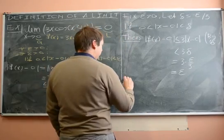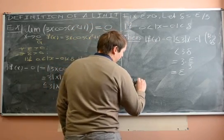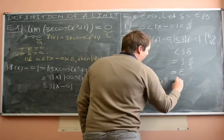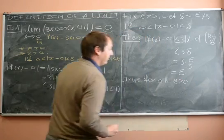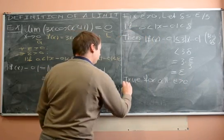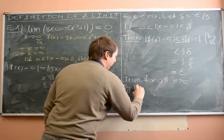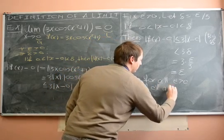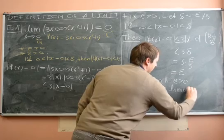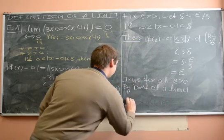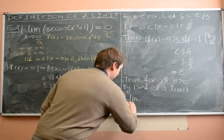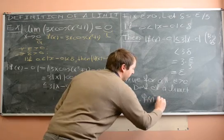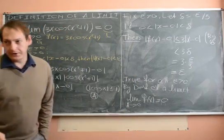So, the absolute value of f(x) minus 0 is less than epsilon whenever the absolute value of x minus 0 is between 0 and delta, with delta being epsilon over 3. This is true for all epsilon greater than 0, so by the definition of a limit, we've shown that the limit as x goes to 0 of f(x) is 0.